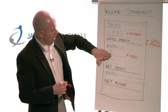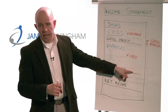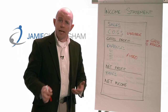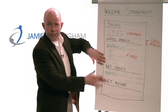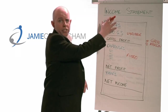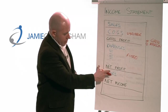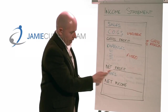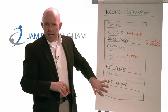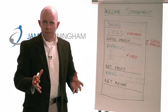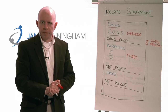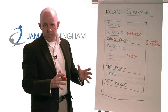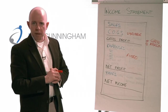Once we've got our gross profit, we subtract our expenses from that and that gives us our net profit. That's the number a lot of people focus on — you want to make sure it's a positive number. If it's negative, either you've got too many expenses, your margin isn't high enough, or you just don't have enough sales. Then we've got taxes, and after that we have net income. The way I've laid this out isn't necessarily how every income statement looks — your accountant may do it slightly differently — but these are the main components.